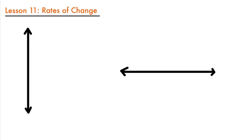A common use for rates of change is to describe motion of an object moving in a straight line, whether that be up and down or left to right. When we describe these motions, we typically view the up direction as positive and the down direction as negative. In the same way, the right direction is positive and the left direction is negative.